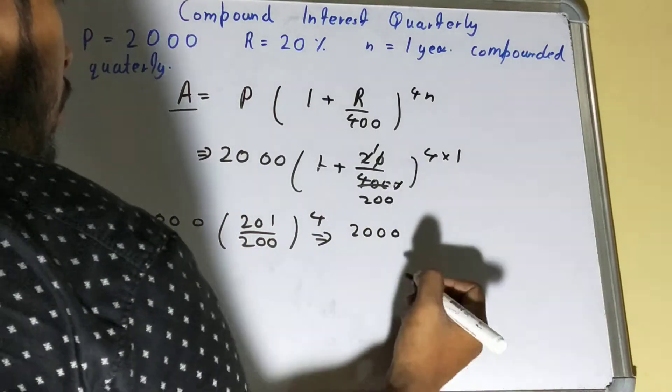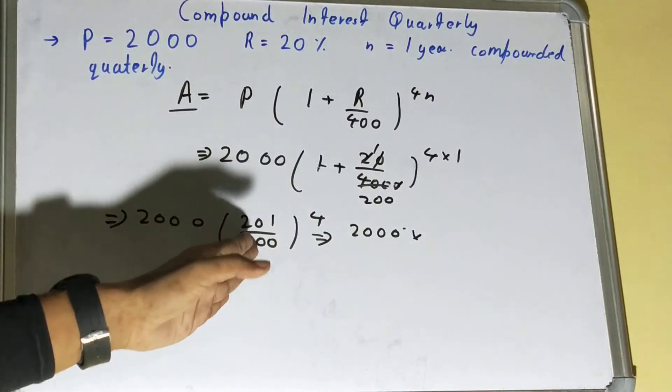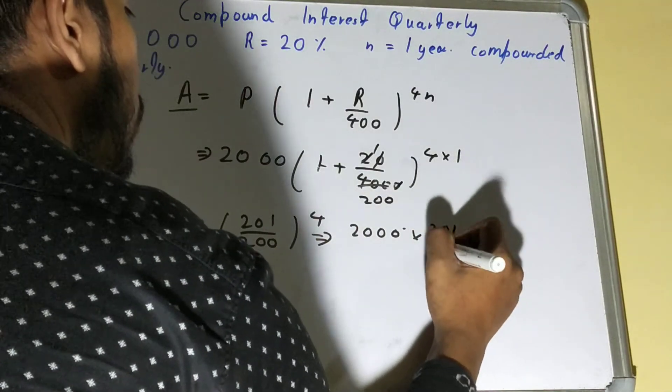So this is 2000, and because we have four over here, we need to multiply this fraction by four times. So it will be 201 upon 200...